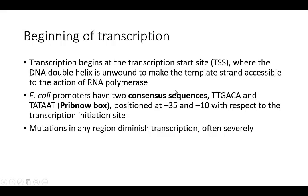Upstream of the TSS, there are two consensus sequences, at least in E. coli. The first is T-T-G-A-C-A, and the second is called the TATA box or Pribnow box: T-A-T-A-A-T. They have very specific locations: the first is at minus 35 bases upstream of where transcription starts, and the second is 10 bases upstream. If there are any mutations in either of these — in location or sequence — you may still get transcription, but the rate is probably going to be quite a bit lower, because RNA polymerase can no longer find where to start.